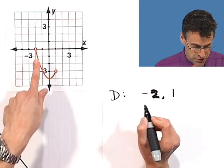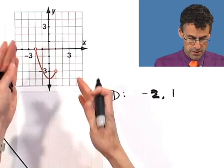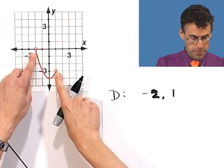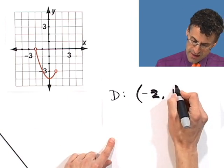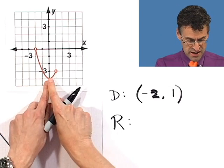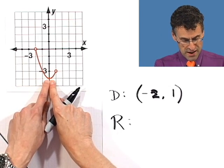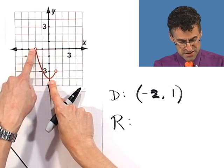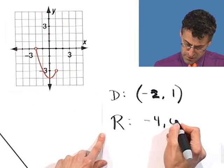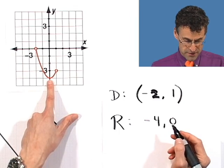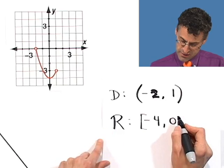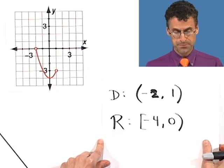So the domain is negative 2 to 1, and nothing else. They're open circles, which means I do not include them, so that's the domain: (-2, 1). What about the range? I hit as low as negative four and as high as y = 0. So I go from negative four to zero. I include negative four, but I don't include zero because there's a hole there: [-4, 0).